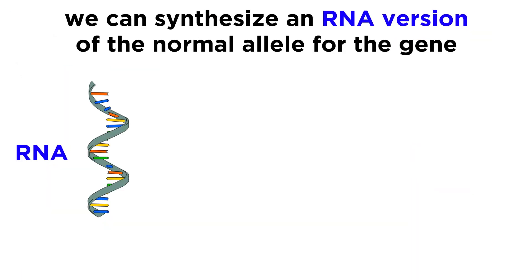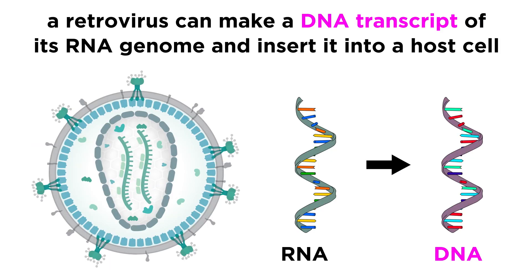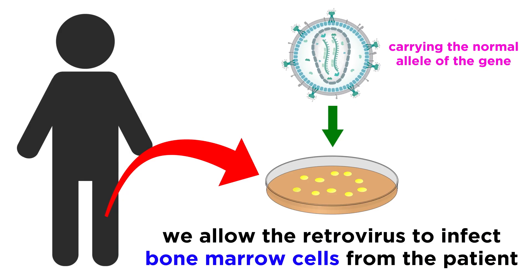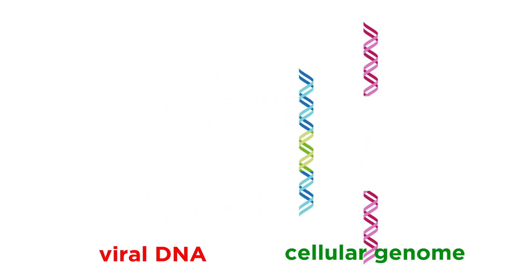We can synthesize an RNA version of the normal allele for the gene of interest, and insert it into a retrovirus. Recall that a retrovirus has the ability to generate a DNA transcript of its RNA genome, which it then inserts into a host cell for replication. We then allow this retrovirus, containing our cloned gene, to infect bone marrow cells that have been removed from the patient. The virus is taken into these cells, and viral DNA containing the normal version of the gene of interest is inserted into the genome.